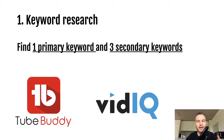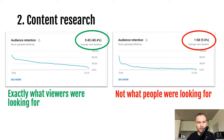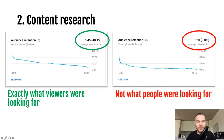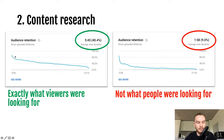Now we have our primary keyword and three secondary keywords. The next step is content research. The goal is to find what people actually want to know when they type in that keyword — what your video should cover to keep people watching. Here's an example of a video where I did this well: it's 40 minutes long and 40.4% audience retention, which is pretty good. Compared to another video where 75% of people clicked away after a couple of seconds because they didn't get what they were looking for. That's why content research matters.